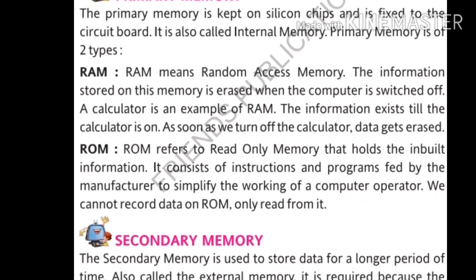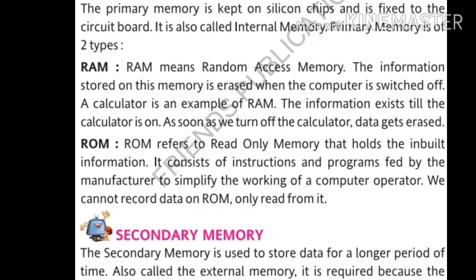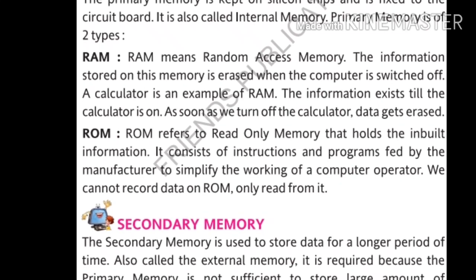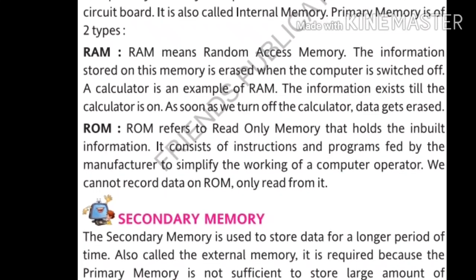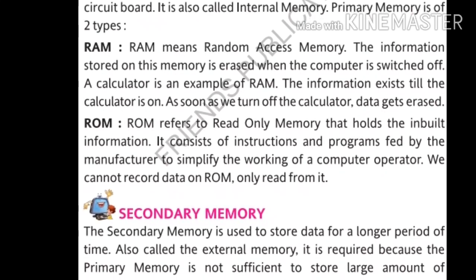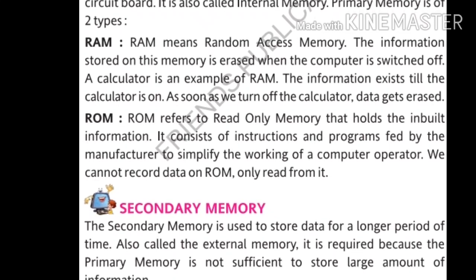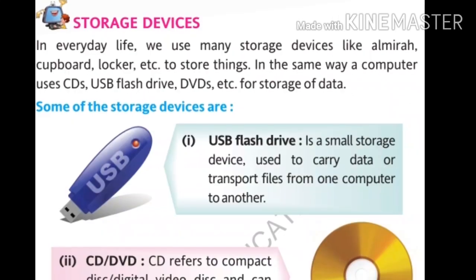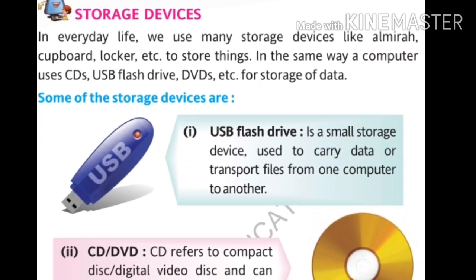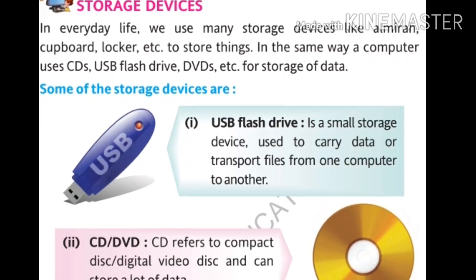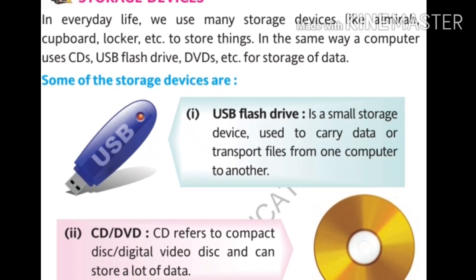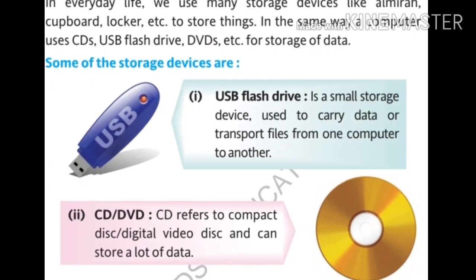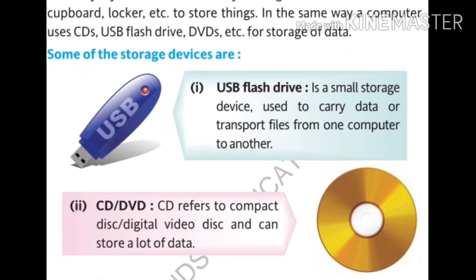The next type of memory is secondary memory. Secondary memory is used to store data for a long period of time and is also called external memory. It is required because primary memory is not sufficient to store large amounts of information. In everyday life we use storage items like almirahs, cupboards, and lockers to store things. In the same way, a computer uses CDs, USB flash drives, DVDs, etc. for storage of data.